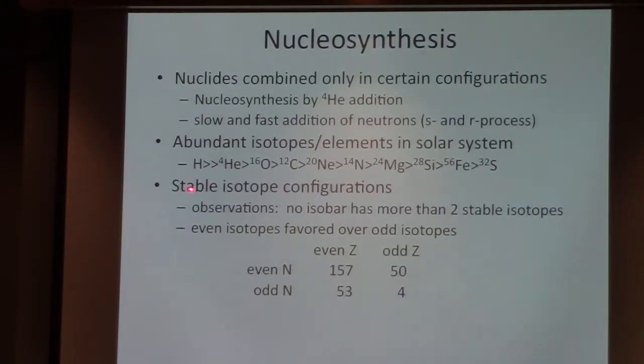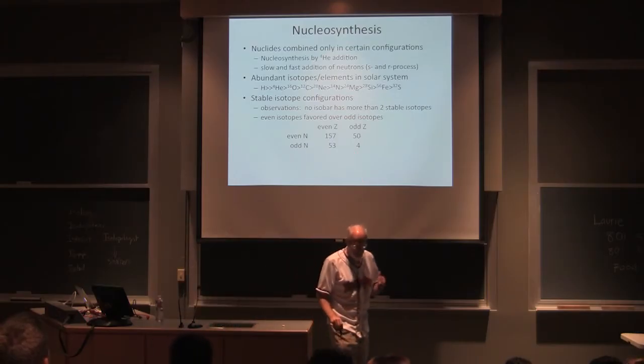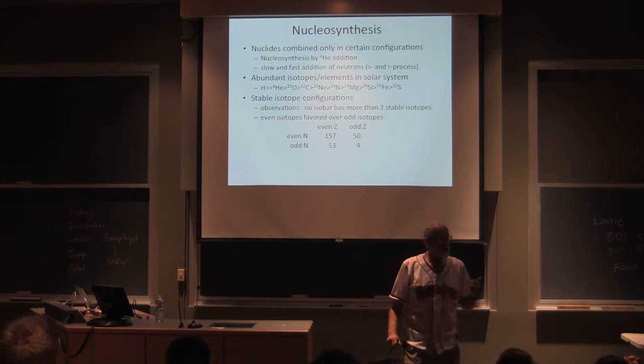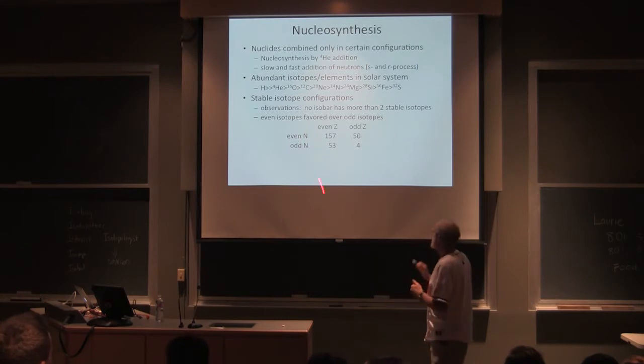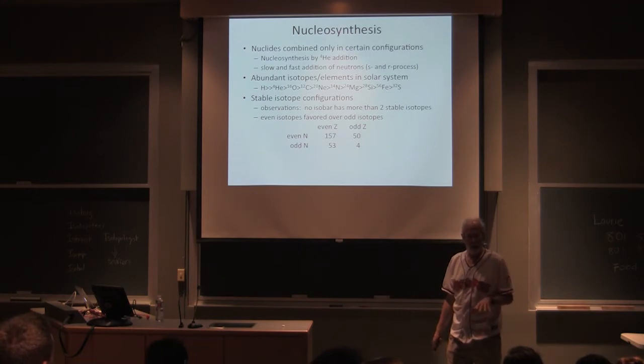Now if we look at only the stable isotopes, we find a really interesting phenomena. Remember an isobar is the same atomic mass, like nitrogen-14 and carbon-14. There's no isobar that has more than two stable isotopes, none. That's kind of an interesting observation.